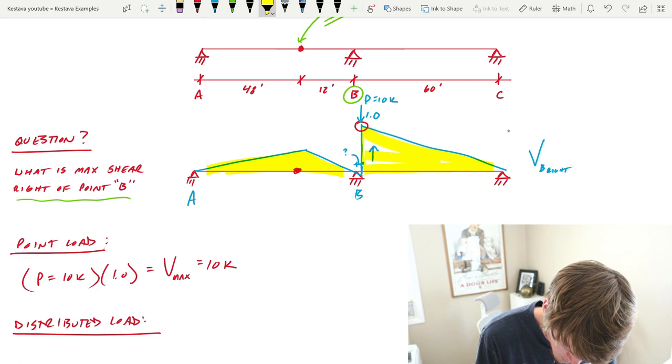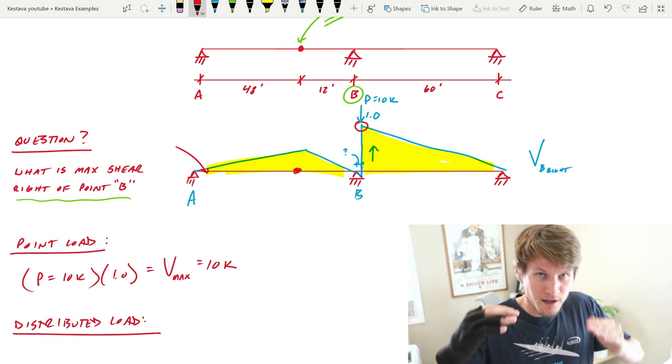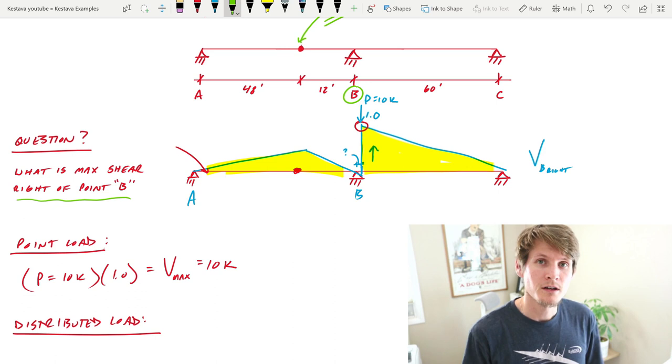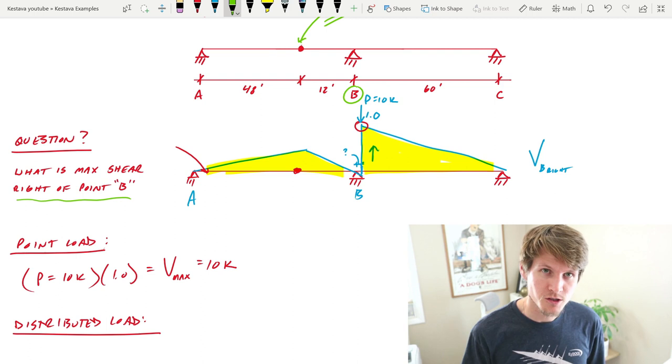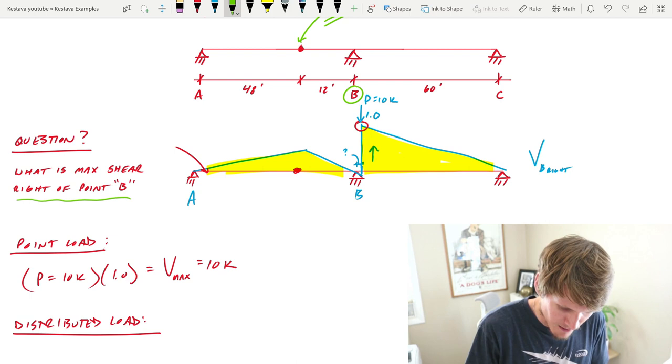We want to take into account - if I highlight all the area under here and under here - anything north of our original line, our red line, anything above that, we need to calculate that area to determine what the maximum shear due to the distributed load is.